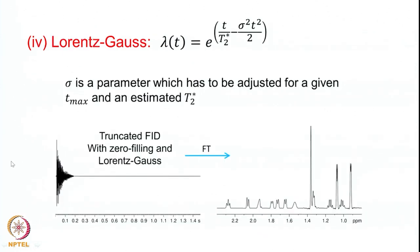One more function is the Lorentz-Gauss function: e^(t over T2_star minus sigma squared t squared over 2), where sigma is a parameter adjusted for a given T_max and estimated T2_star. Multiplying the FID by this function gives a smoother FID going to zero, with reasonably good signal-to-noise and digital resolution after Fourier transformation. Combining zero filling and multiplication by suitable functions, you can get better signal-to-noise ratio as well as better resolution. These are the cosmetics of data collection and processing, and one must optimize these parameters for better signal-to-noise ratio and better resolution in your spectrum.